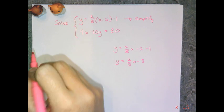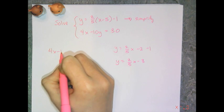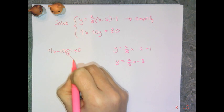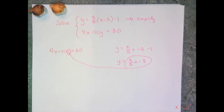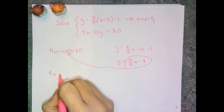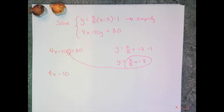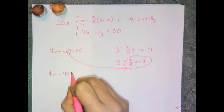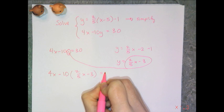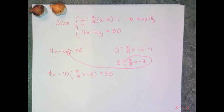So I take the other equation, the 4x minus 10y equals 30, and I replace that y with 2 fifths x minus 3. So I have 4x minus 10, and since I'm substituting I should put things in parentheses, 2 fifths of x minus 3 equals 30. So now I have one equation and one variable that I need to solve to find my solution.